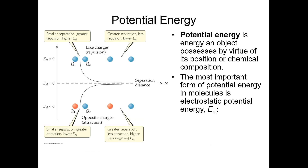Potential energy in physics is typically associated with an object raised above the ground — it can fall down. In chemistry, we tend to think of potential energy in terms of the energy that chemical bonds possess.